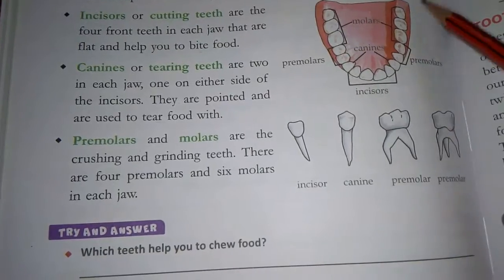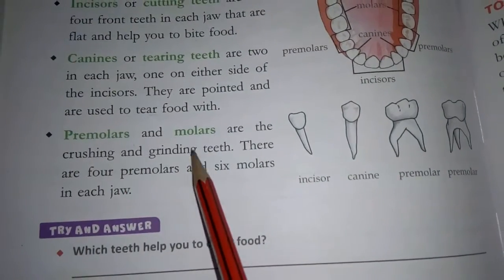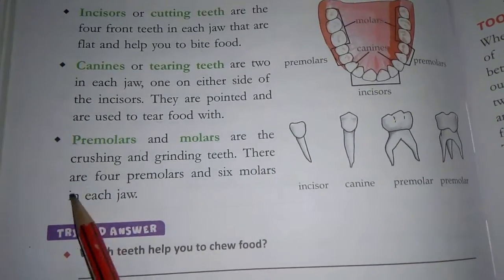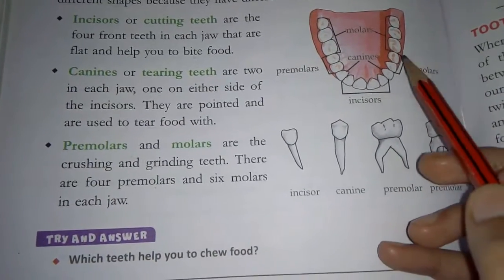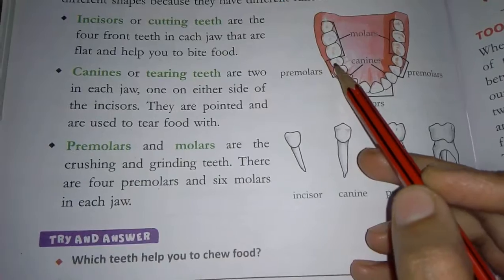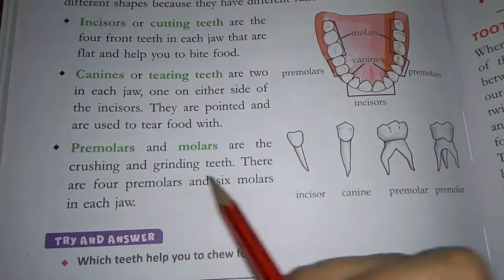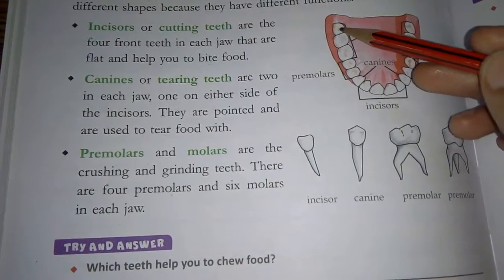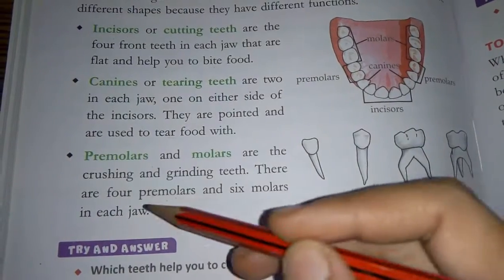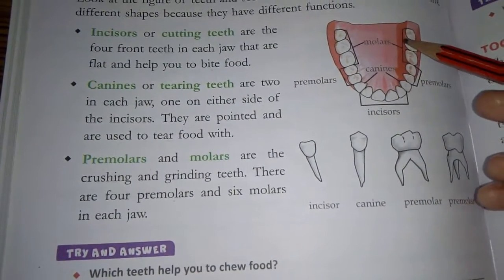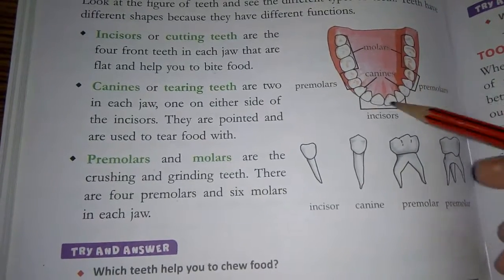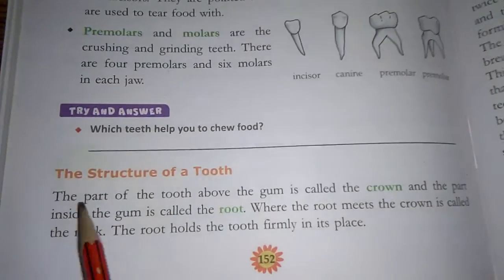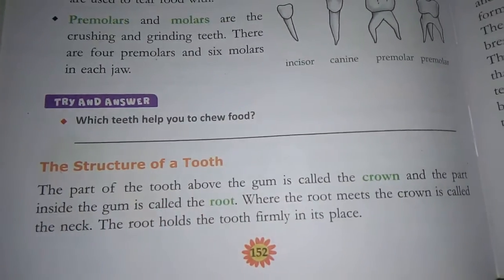The third type is premolar and molar teeth, also called crushing and grinding teeth. There are six molar teeth in each jaw — upper and lower — making the total count complete for an adult mouth.